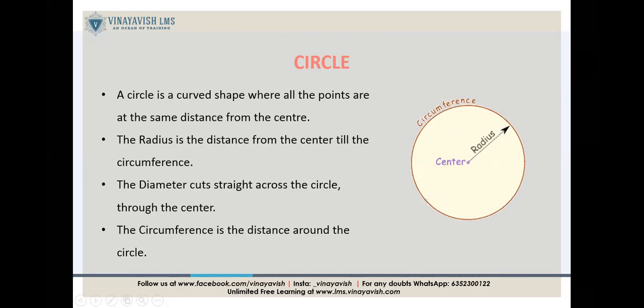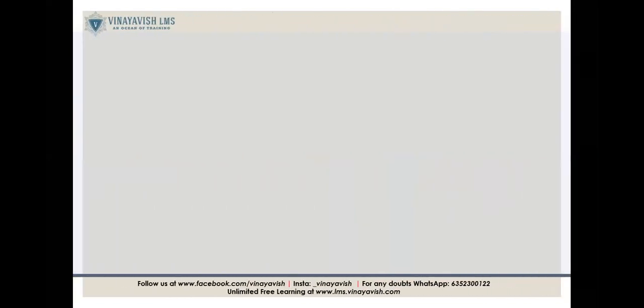It's a curved shape, where all points are equidistant, at the same distance. And very simple examples of circles - if we talk about eating, since I love eating, your orange is a circle. There are many such things, your pizza comes in a circle form, your burger comes in a circle form. So there are many real life examples where we have circles in our day-to-day life.